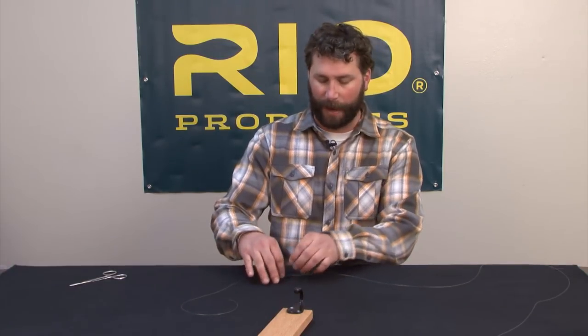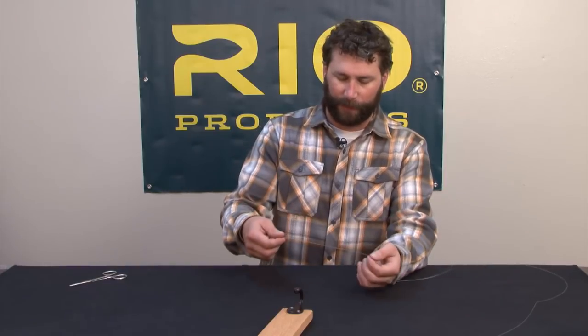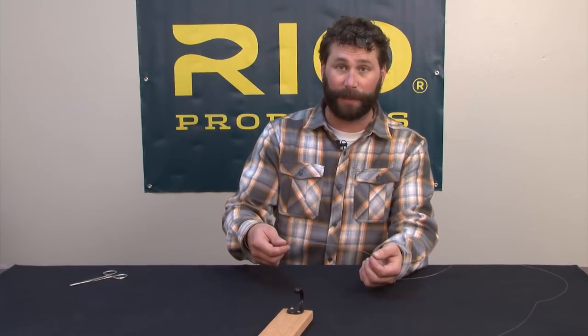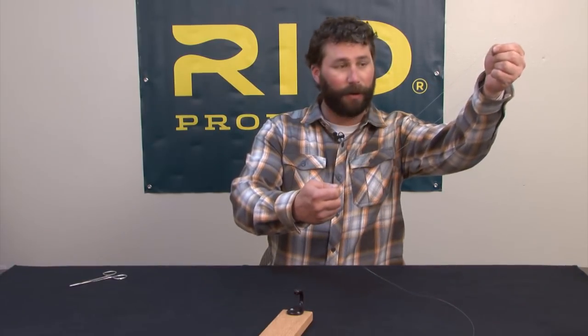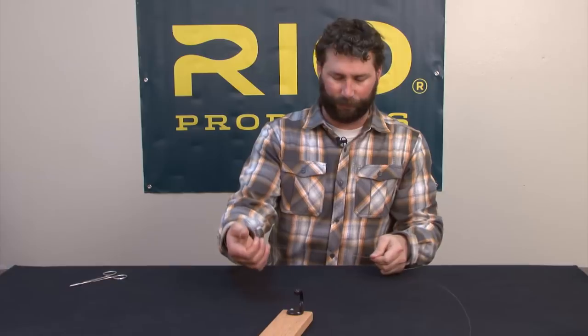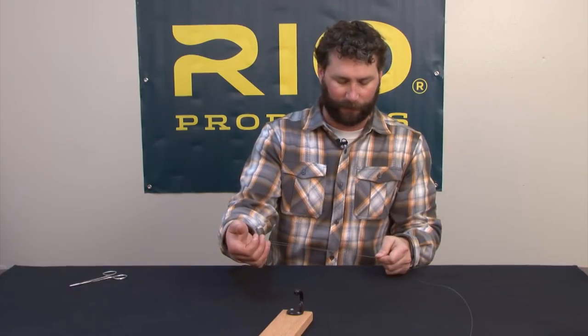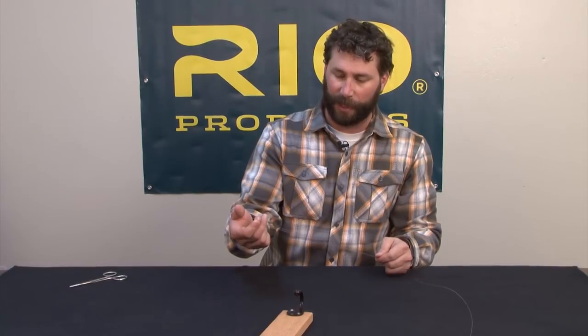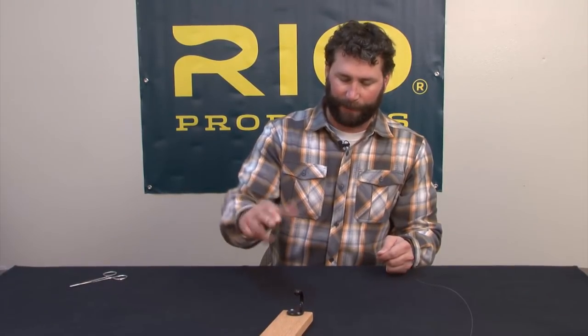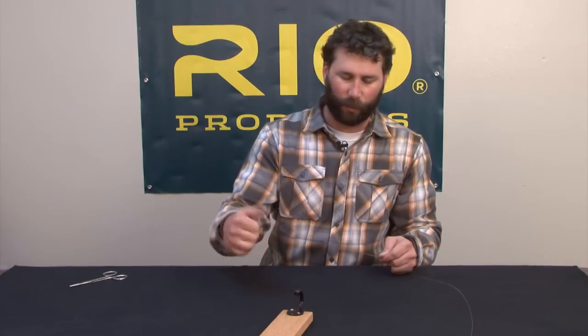To start the knot, I'm using a 20-pound piece of hard mono here and I'm going to overlap by about almost two feet. I'm going to run that doubled over loop down by about a foot and I'm going to start twisting this with my right hand. I'm going to put about 20 to 25 twists in here.